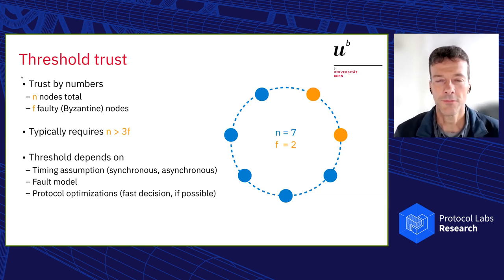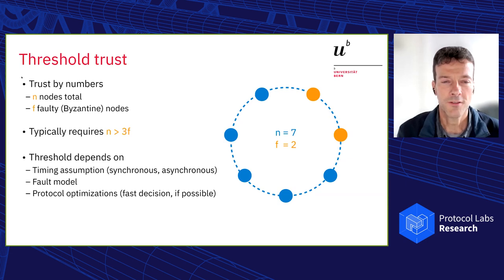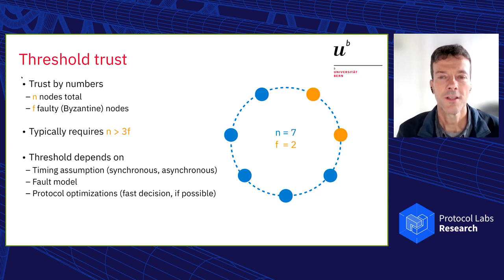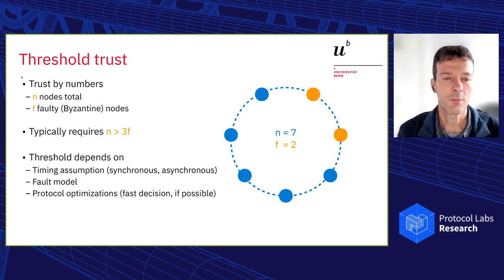In the BFT, how we call this Byzantine consensus world, we need n bigger than 3f, but the most important case is actually the canonical case would be a strict majority n bigger than 2f. What I'm going to mostly talk about is the Byzantine case here, and this is also the way how we develop this.